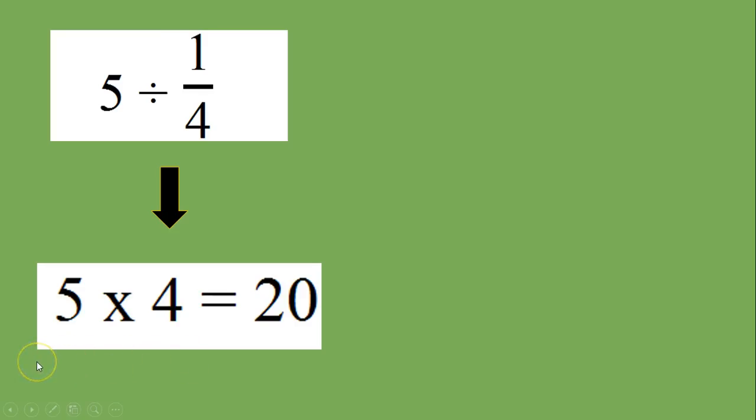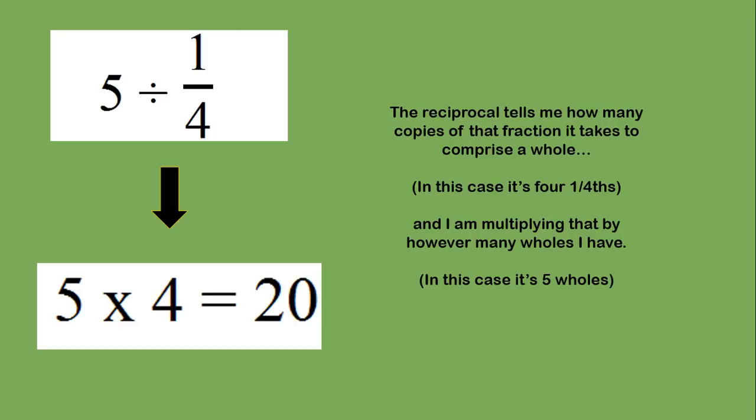So now coming back to five divided by one fourth, we can make sense of five times four equals 20 because the reciprocal tells me how many copies of that fraction it takes to comprise a whole. And in this case, that's four one fourths and I'm multiplying that by however many wholes I have, which in this case is five wholes.